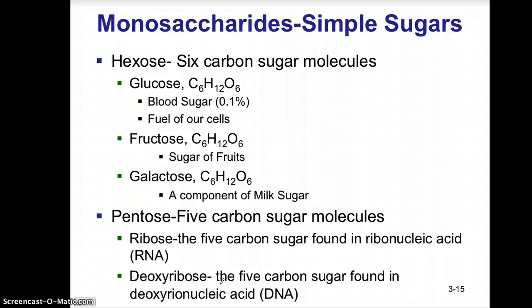Monosaccharides are the simple sugars. The hexose monosaccharides are six-carbon sugars. We have three basic types: glucose (C₆H₁₂O₆), which is blood sugar and the fuel of our cells; fructose (C₆H₁₂O₆), which is the sugar of fruits; and galactose (C₆H₁₂O₆), a component of milk sugar. All three share the same molecular formula but differ in atom arrangement — therefore we call this isomerism; they are isomers of each other.